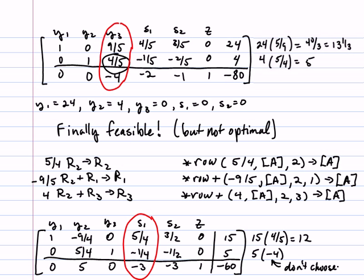But remember we don't want to choose the pivot element where the element from the pivot column is 0 or negative. Therefore this one is not even a candidate, so we will need to pivot on the 5 fourths.